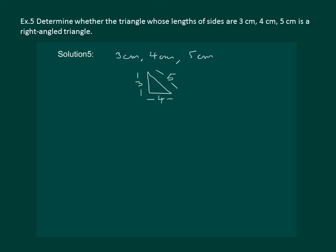Now, by Pythagoras theorem, we know that if 3 square plus 4 square equal to 5 square, then a right triangle is possible.